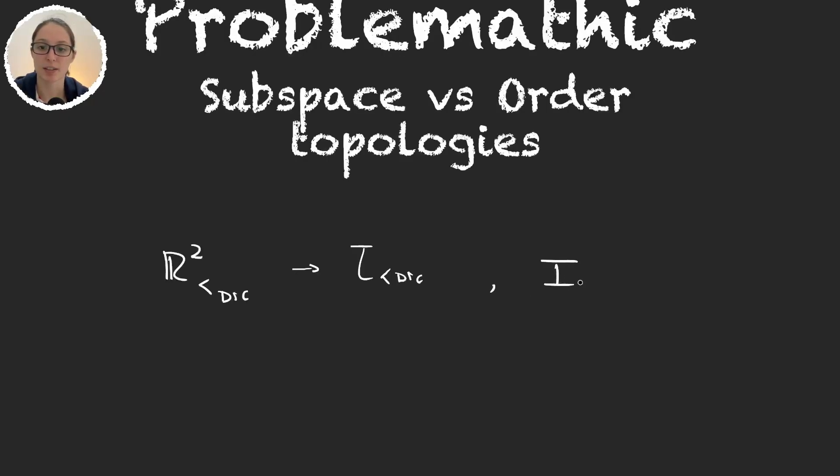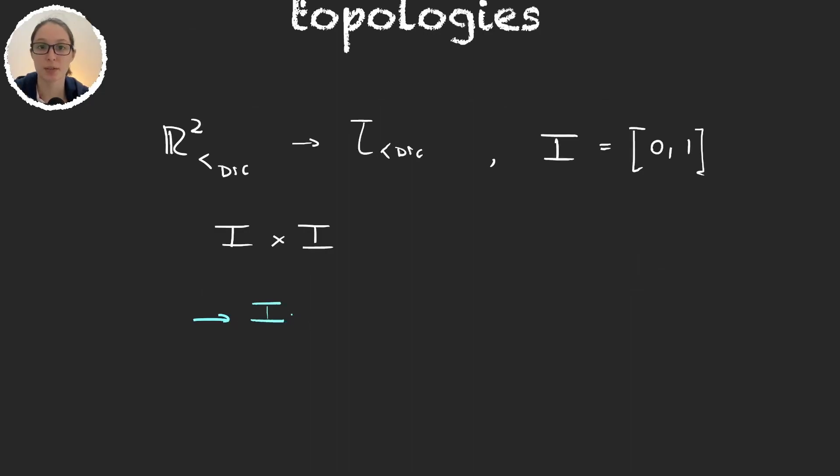Now let's consider the set I to be the interval 0,1 and let's think about possible topologies that we can define on I-squared. Well I can think of two topologies. The first one would be the inherited topology as a subspace of R2 with the dictionary topology.